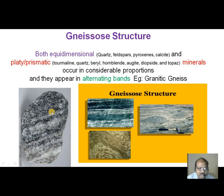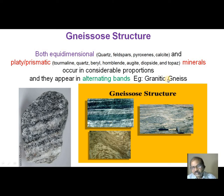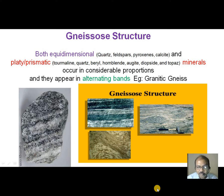See the hand specimen here — very clearly there are alternate bands: white-gray, white-gray, white-gray. So white band and gray band, and even the same bands can be seen here in the hand specimens. So, appearance of alternate bands is always characterized by the metamorphic rock as gneiss or kinetic gneiss. In this, both equidimensional minerals as well as prismatic minerals occur in considerable proportions.